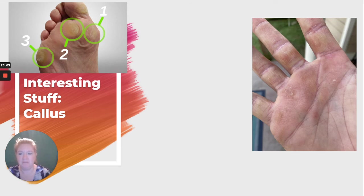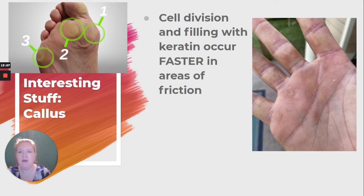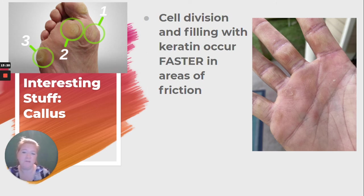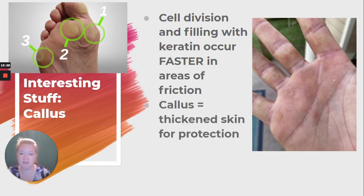Calluses. Why do we get calluses? Cell division and filling with keratin — you remember that stratum granulosum layer — occurs faster in areas of friction. So if you have uncomfortable shoes rubbing your foot or you've been working with your hands, in those areas of friction the division and filling with keratin happens faster, creating thickened skin for more protection.